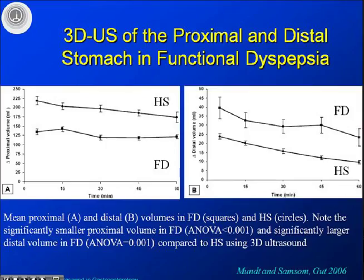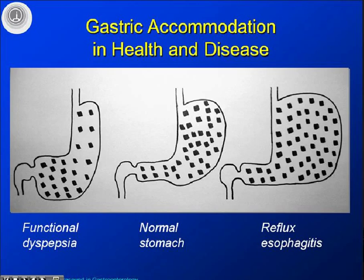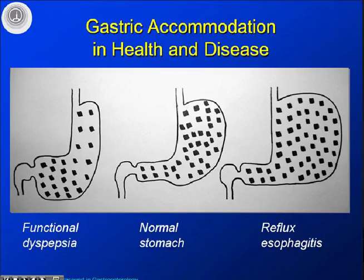This has also been confirmed by other groups. A group from the Netherlands using 3D ultrasound found the same: dyspeptic patients had a smaller proximal stomach volume, whereas in the distal stomach the finding was opposite, indicating antral distension. To summarize: in normal accommodation you find a relaxed upper stomach and normal antrum; in functional dyspepsia there is impaired accommodation and distended antrum; and in reflux esophagitis using 3D ultrasound we found an enlarged proximal volume, enabling reflux into the esophagus.